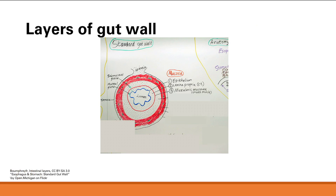This is the more key slide: the layers of the gut wall. Please memorize this — it's super important. We're looking at a cross-section; this is the lumen where your food goes through. Your gut is basically a long tube, and this cross-section applies to the small or large intestine — it's all the same. Starting from the very inside, we have the mucosa, which has three parts: the epithelium — the innermost part lining the lumen — then the lamina propria, which is connective tissue, and then the muscularis mucosa. That smooth muscle is all part of the mucosal layer.